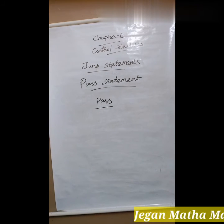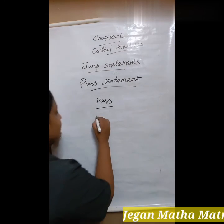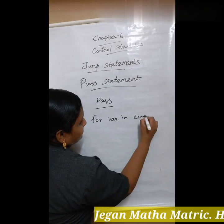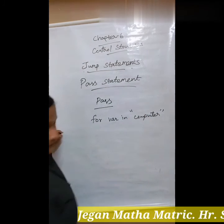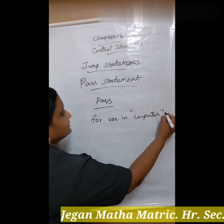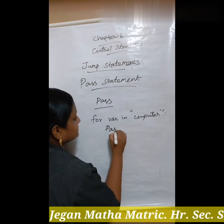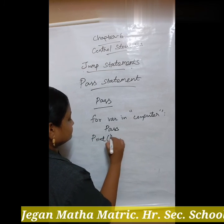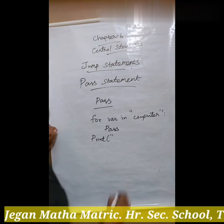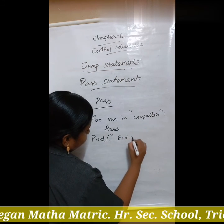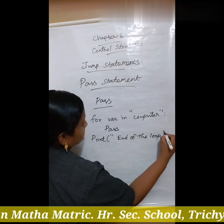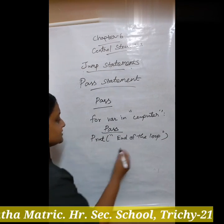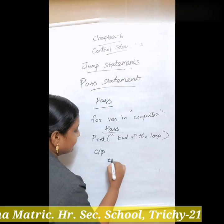To avoid this kind of error, we use pass statement. The example is: for variable in 'computer', use pass. Then print end of the loop. The output of this program — the pass statement doesn't do anything. So the output of this program is just 'end of the loop'.